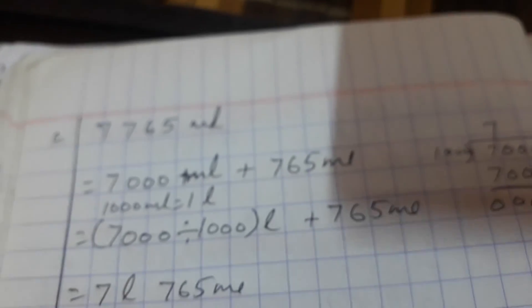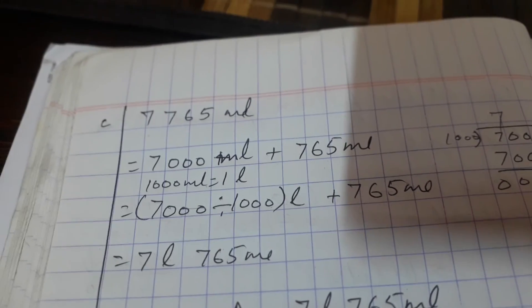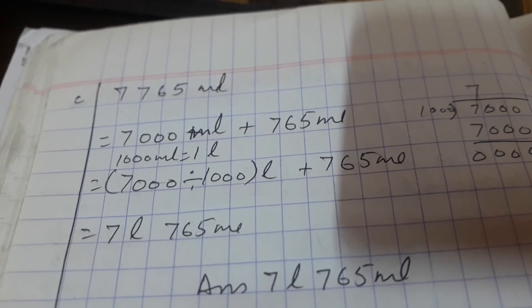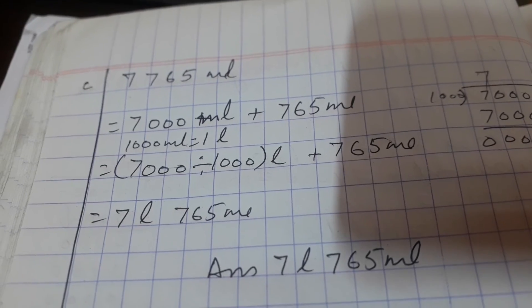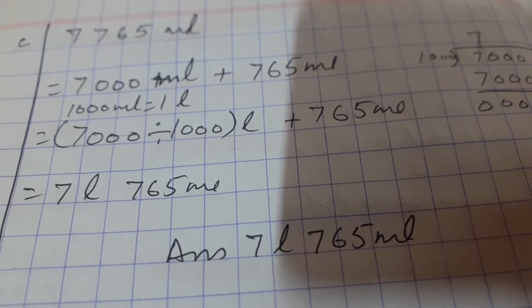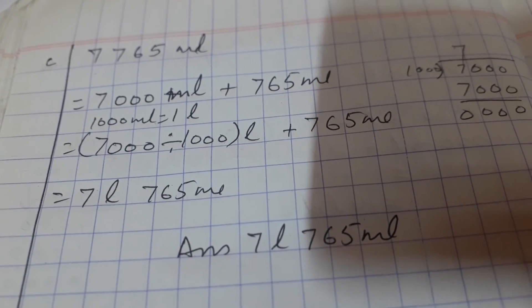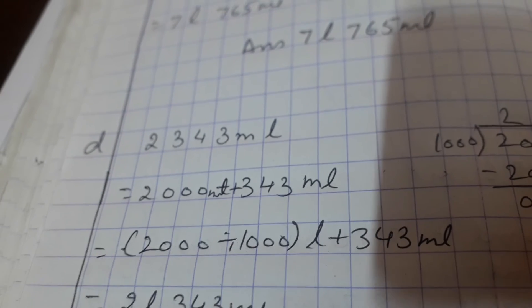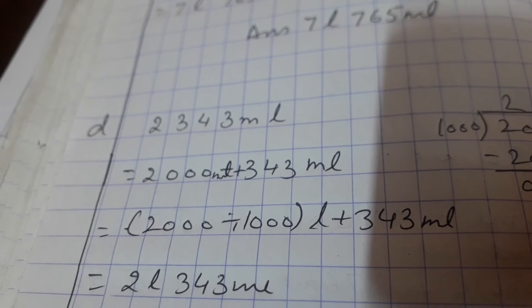Now the next question: 7765 milliliters. We separate it as 7000 milliliters and 765 milliliters. When we convert 7000 milliliters into liters, we divide by 1000 and get 7. We write 765 milliliters as it is. So 7765 milliliters is equal to 7 liters and 765 milliliters.